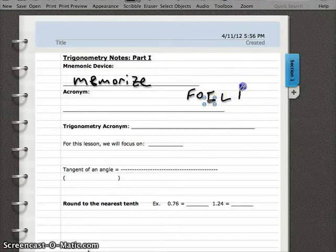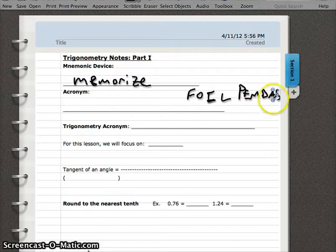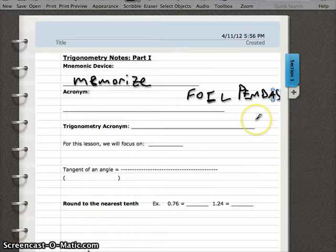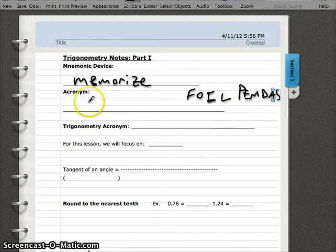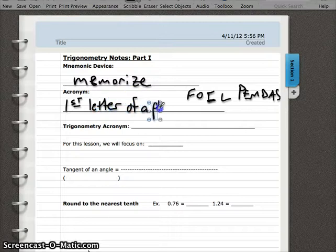There's also another pretty famous one in math, PEMDAS. That's our order of operations. Parentheses, exponents, multiply, divide, addition, and subtraction. So an acronym is where we take the first letter of a word or the first letters of the words in a phrase, and we just create some unique word out of it that just helps us memorize the entire phrase a little bit easier. So an acronym is where we take the first letter of a phrase, and we make a word out of it.